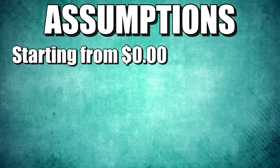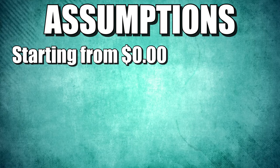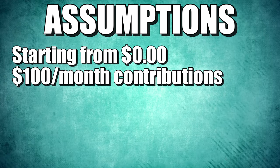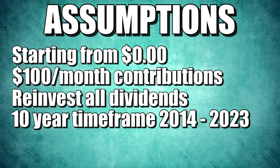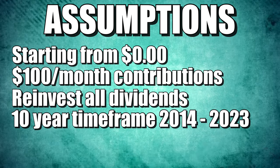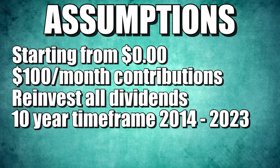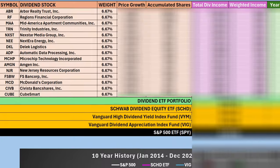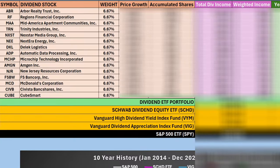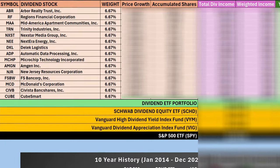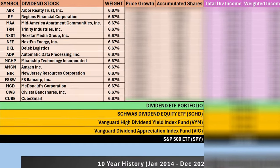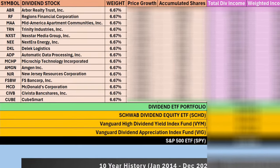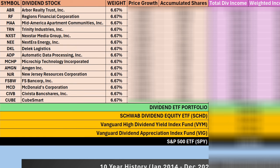The back-test assumptions were: starting from $0, investing $100 per month every month, and reinvesting all dividends along the way. We're going to test this portfolio against three popular dividend ETFs — SCHD, VYM, and VIG — and the S&P 500. Here's the test: how did this custom dividend stock portfolio do against those other investment options?